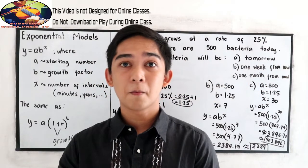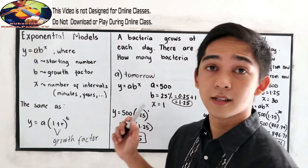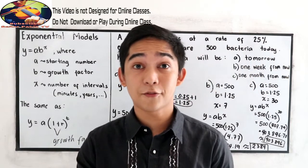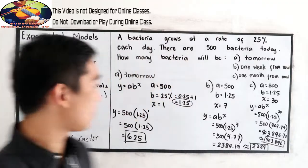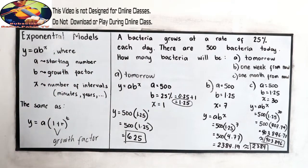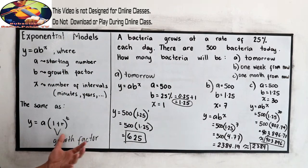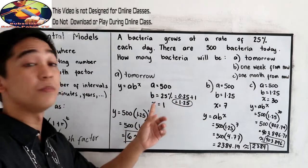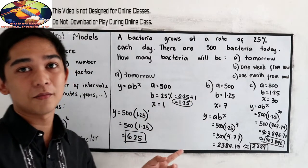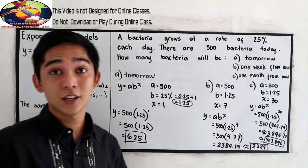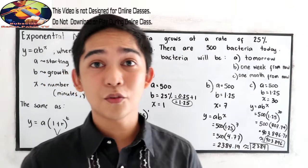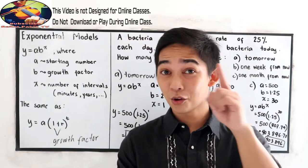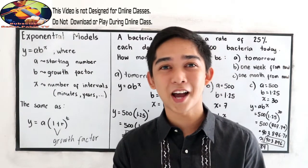So that's it — that's the mathematical model for exponential functions. We just use the formula and focus on our growth factor. Don't forget to add 1 to your b value, because the given is the rate. Once again, thank you for watching Senior Pablo TV. Don't forget to subscribe.